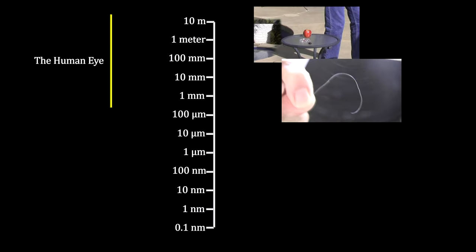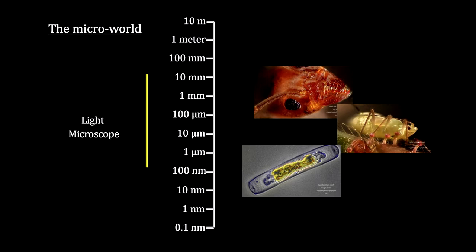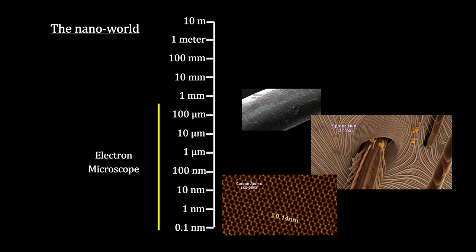In this segment, we've gone from what we can see with the human eye to what we can see with optical microscopes to what we can see with electron microscopes. In our next segment, we'll take a closer look at atoms and their subatomic particles.